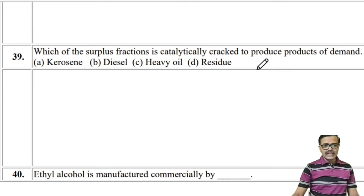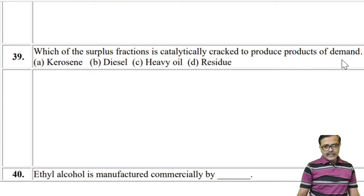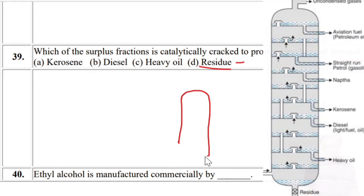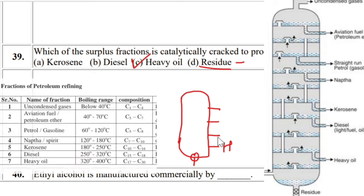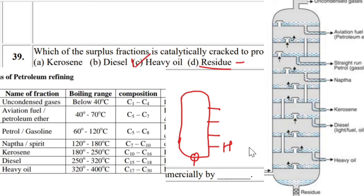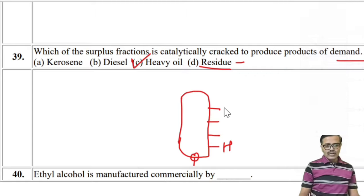Surplus fractions are catalytically cracked to produce products of demand like petrol. Higher fractions — residue, heavy oil — can be cracked into smaller ones. Heavy oil contains the maximum carbon atoms, so it is broken down to give required smaller products. The answer is heavy oil.